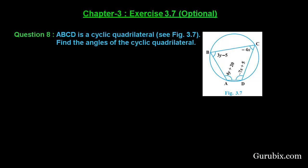Welcome friends, let us solve question number 8 of exercise 3.7 of chapter 3. The question says ABCD is a cyclic quadrilateral. This is the figure of the cyclic quadrilateral and we have to find the angles of it. Let us see how to solve this question.